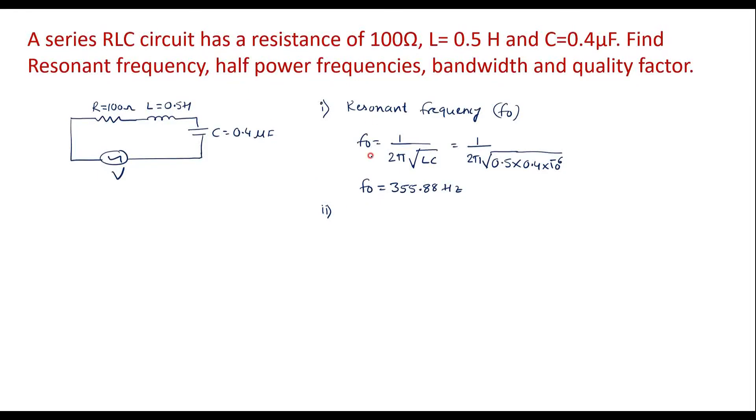Now let us calculate half power frequencies. We know that F1 and F2 are known as half power frequencies. The lower cutoff frequency F1 is equal to F0 minus R by 4 pi L. Simplifying this, F0 is 355.88 minus R value is 100 divided by 4 pi into L value is 0.5. So simplifying this we will get F1 is equal to 339.96 Hertz.